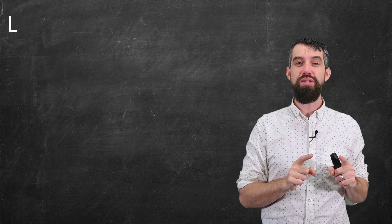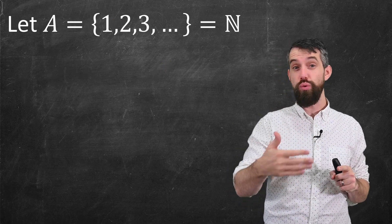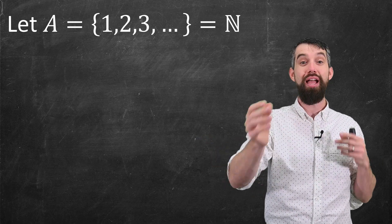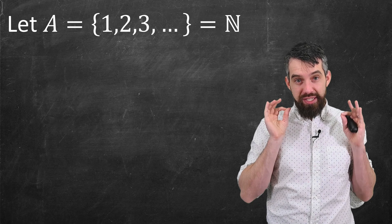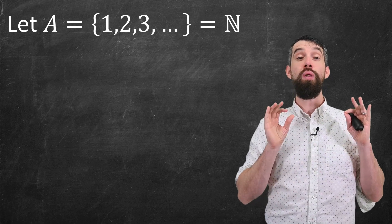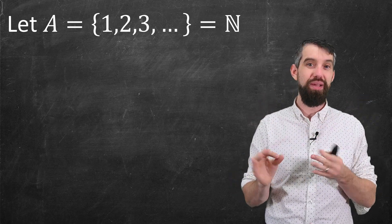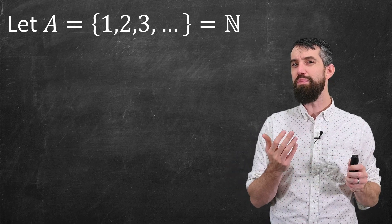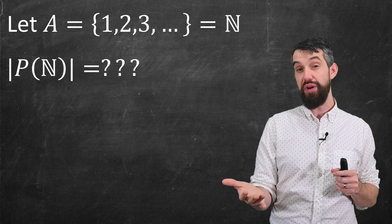Imagine your set A was all of the natural numbers. So one, two, three, but keeping on going four, five, six on forever. It's an infinite set. The size of A is what we call countably infinite because I'm using the counting numbers to get to that infinity. So then, what is the power set of the natural numbers?